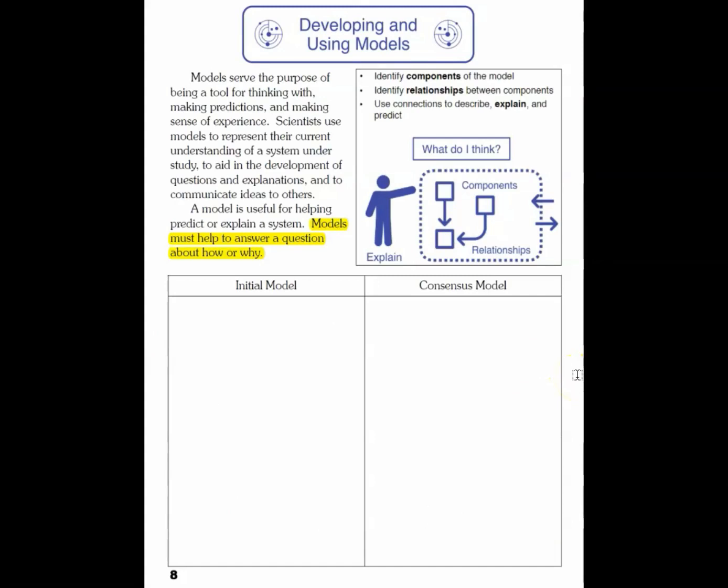Scientists don't work in isolation. Scientists collaborate and research with one another, and so what then happens is a consensus model. We look at all the various models that have been submitted, and the research community agrees upon a model.